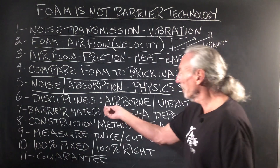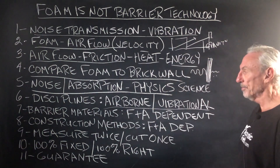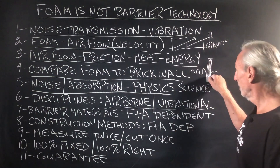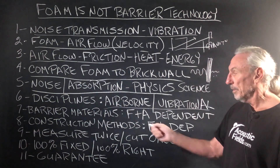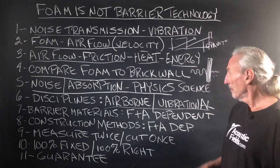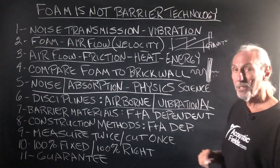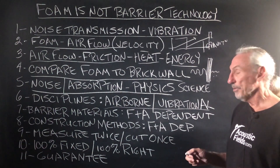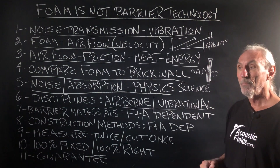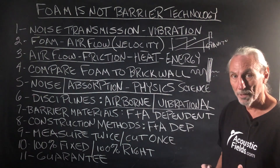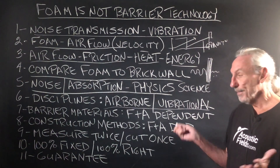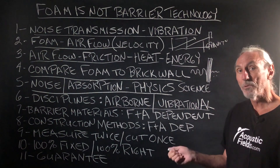We have to look at the two disciplines we need to focus on. Barrier materials — to go from a snake to a worm — are frequency and amplitude dependent. Every material we use in that barrier depends on the noise. That's why I'm always saying measure, measure, measure. People ask me all the time, 'Will this work? Will that work?' I have no idea, because I don't know your noise.